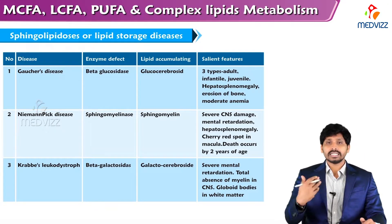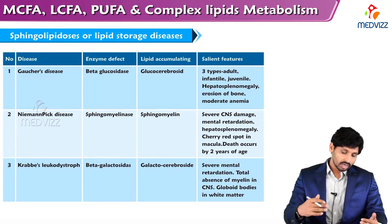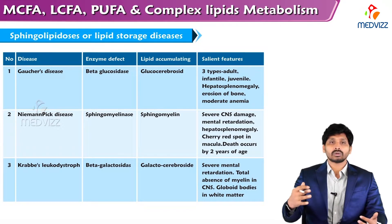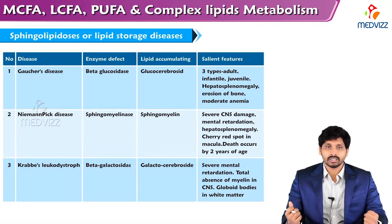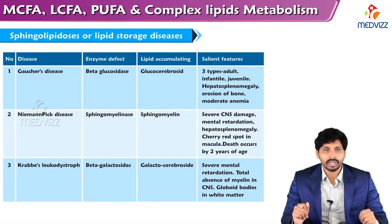Replacement of deficient enzymes has been tried in Gaucher's disease with limited success, whereas the rate of synthesis of lipid is normal but the problem is only with the degradation pathway. If there is failure in degradation, the concerned lipid will start accumulating and occupying space in the subcellular organ. The extent of enzyme deficiency is the same in all tissues.